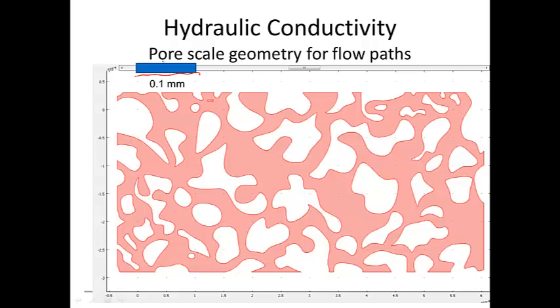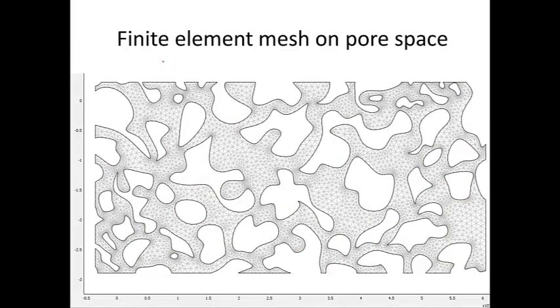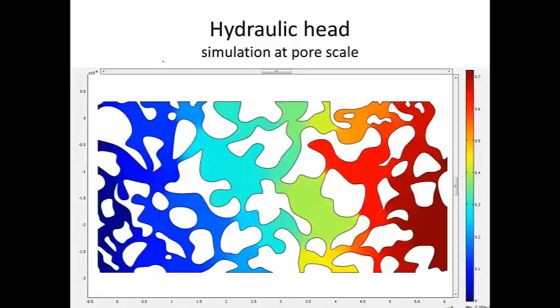As it turns out, we can analyze that. If we can determine what this geometry is, we can analyze it. We can put a finite element mesh on it. This is an example of that kind of mesh. We have equations on each one of these intersections, and we can solve that. It's a fairly complicated problem, and if we do that, we can determine the hydraulic head.